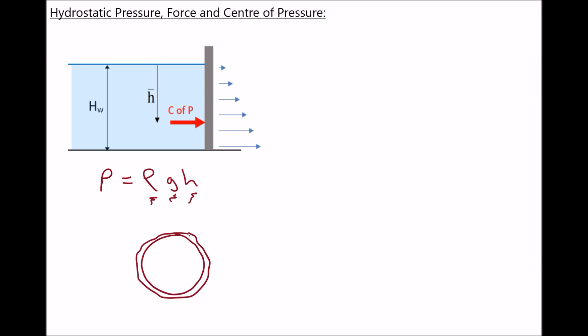On the right hand side of the diagram, I've provided an indication of how the pressure varies as we move further from the free surface. At the free surface the pressure will be zero gauge, or atmospheric pressure, and the further down we go we see that the pressure increases.